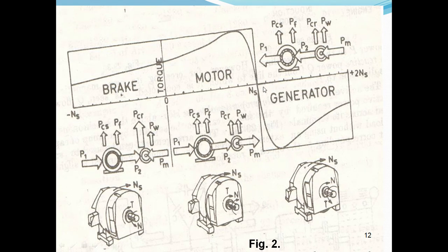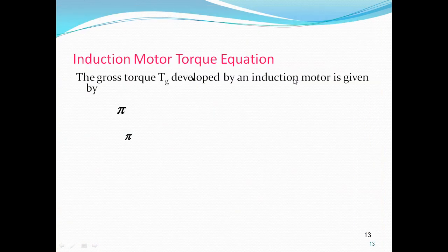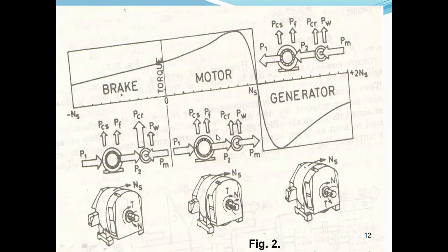If the machine works above synchronous speed it acts as a generator; below synchronous speed it works as a motor. The figure shows the power stages for generator, motor, and brake modes. The motor works as an induction motor when speed is less than synchronous speed, and as a generator when speed is greater than synchronous speed.